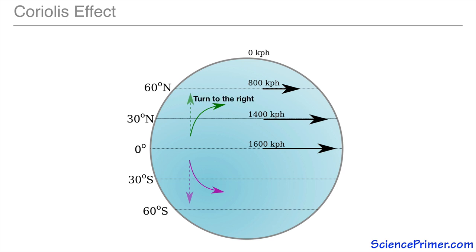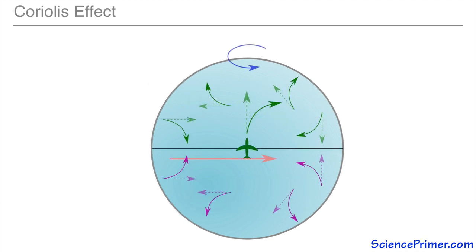This pattern of turning to the right in the northern hemisphere and to the left in the southern hemisphere happens no matter where the object is launched or in what direction it is traveling. In addition to the effect on air travel, the Coriolis effect influences natural processes such as weather patterns and ocean currents.